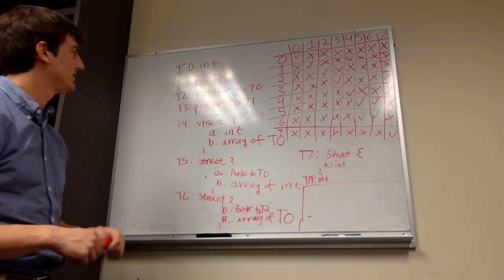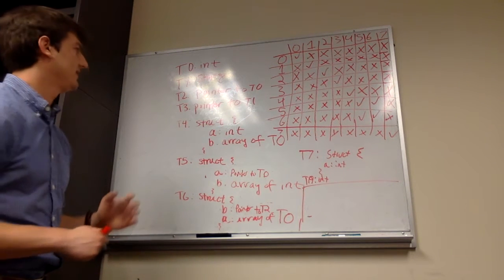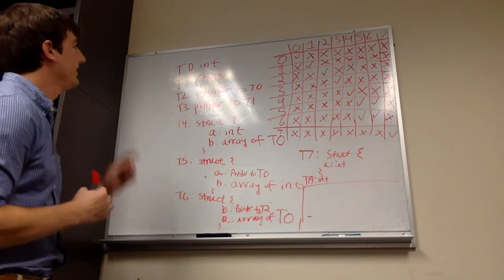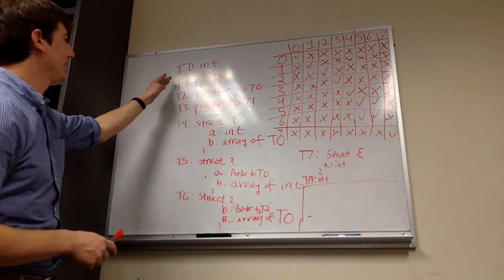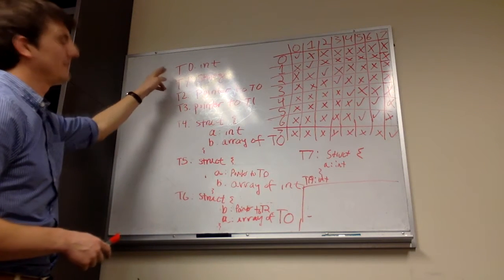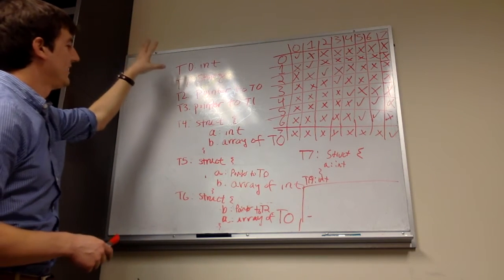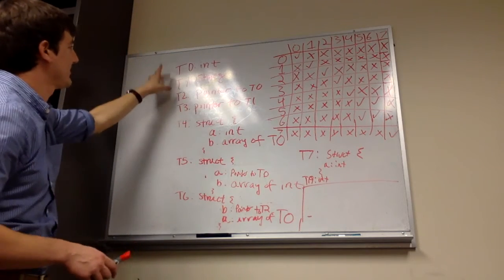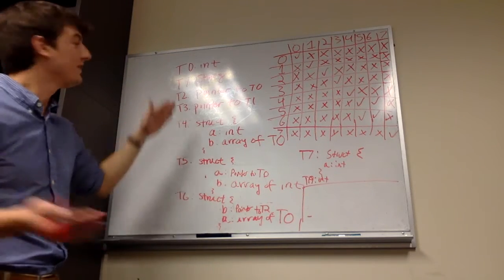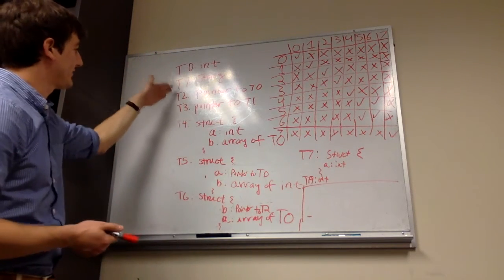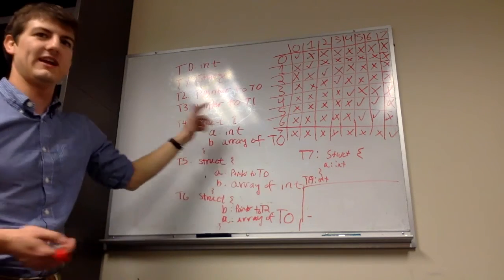So how do you tell two variables are name equivalent? The first thing we were talking about before we continued recording is that we don't ever talk about two types being name equivalent, because here we are defining new types and giving them names.